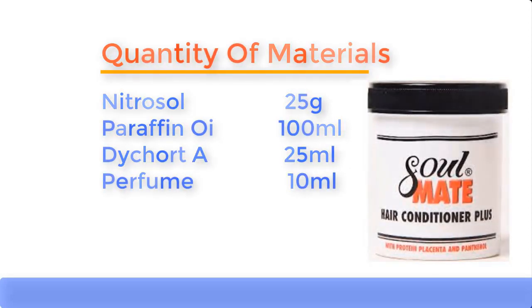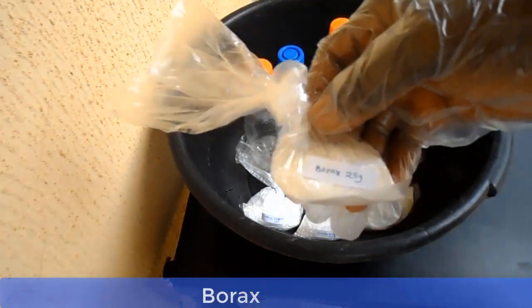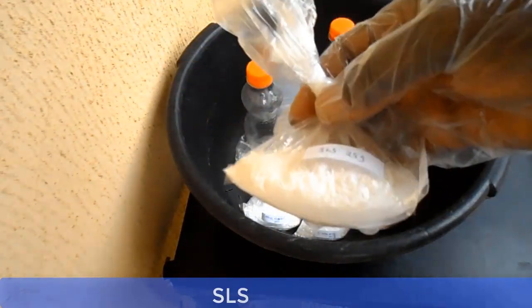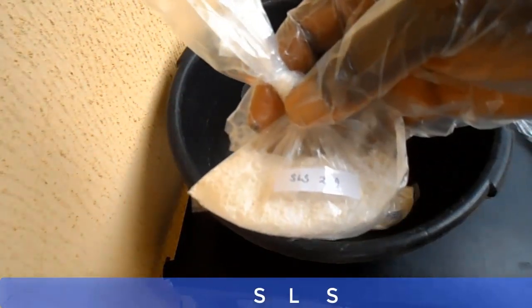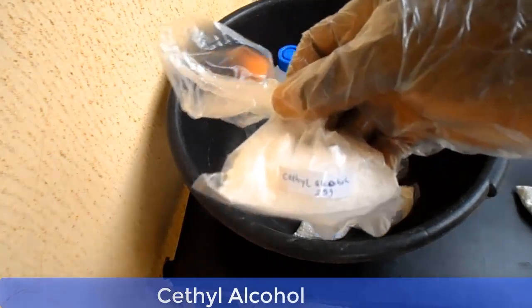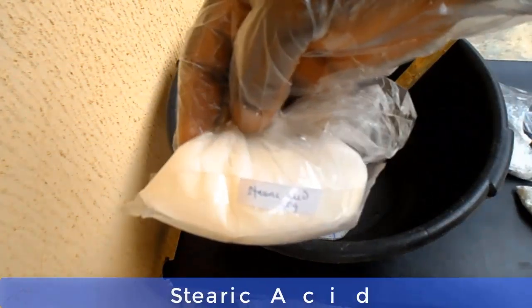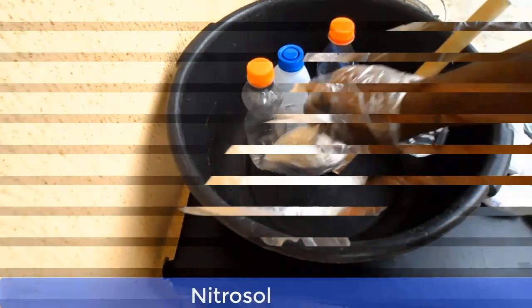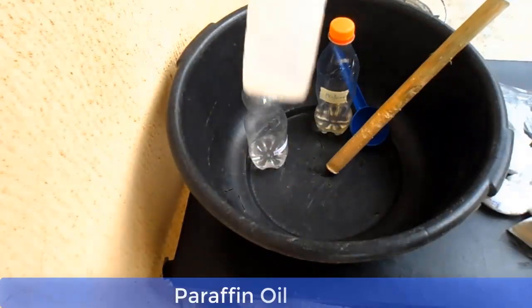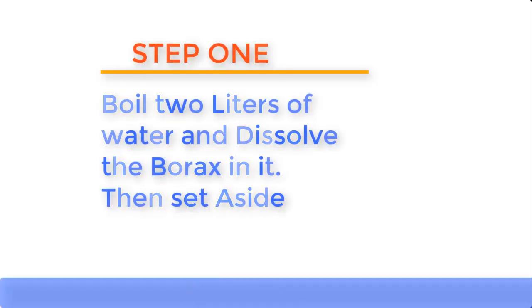Now let me show you the chemicals one by one before we go into the mixing. This is borax, and this is sodium lauryl sulfate, also known as SLS. This is cetyl alcohol, and this is stearic acid. This is cruder wax, and this is nitrosol. This is paraffin oil, dicot A, and perfume.